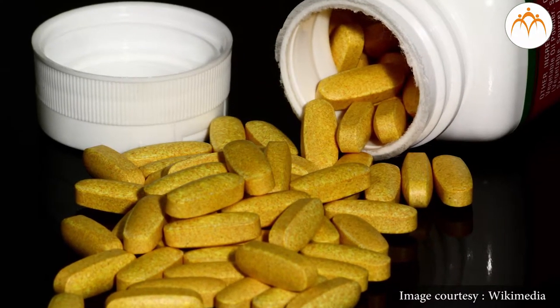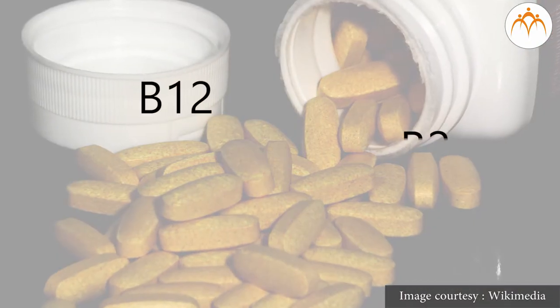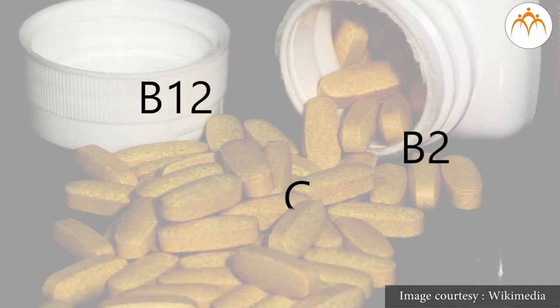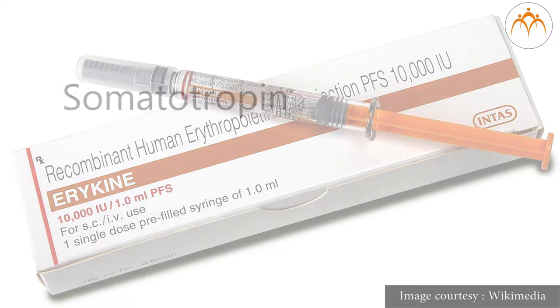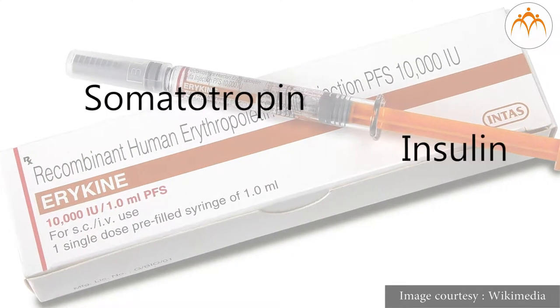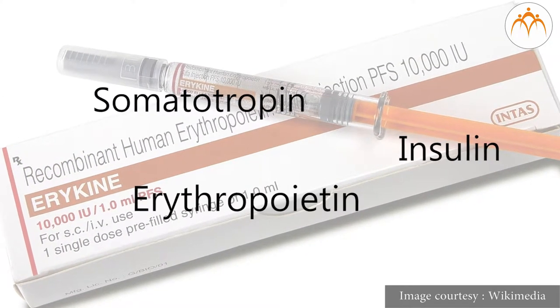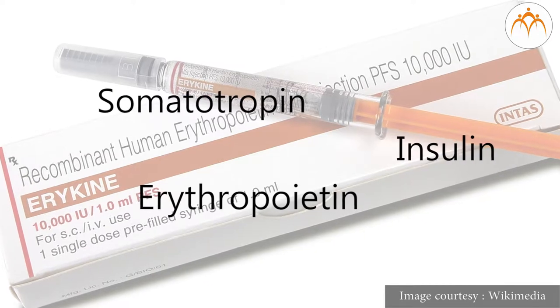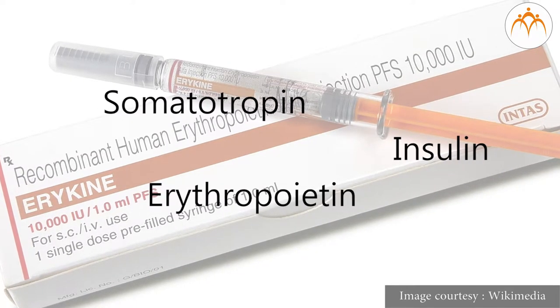Other types of medicines produced are therapeutics like vitamins — for example, vitamins B12, B2, and C — and hormones like somatotropin, insulin, and erythropoietin, which are used to treat respective deficiency disorders.